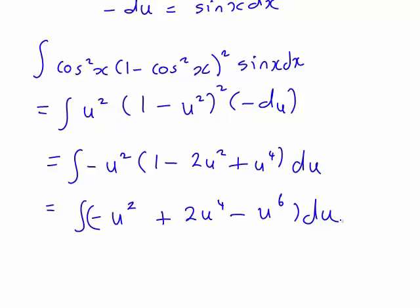And now, it's a straightforward matter of working that out as negative u cubed divided by 3 plus 2u to the power of 5 divided by 5 minus u to the power of 7 divided by 7 plus c.